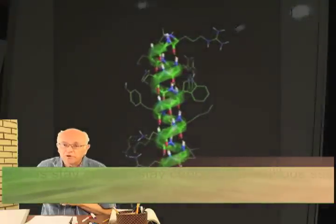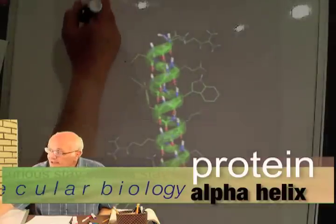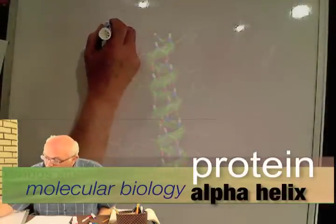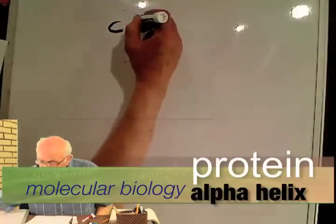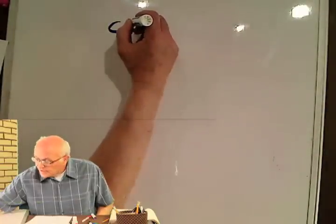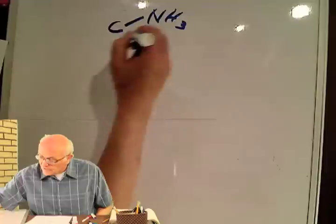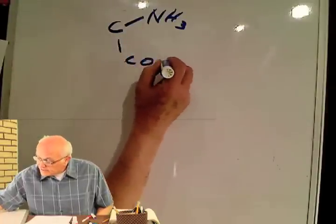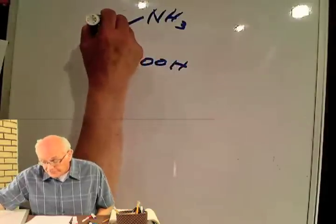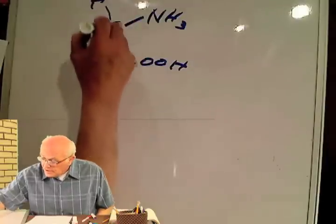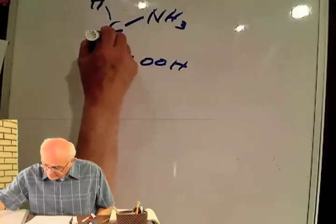Carbon likes to form four equal bonds. In the case of proteins, those bonds are with an amine group, a carboxylic acid group, a hydrogen, and another group.